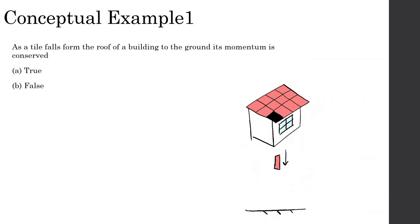As a tile falls from the roof of a building to the ground, its momentum is conserved — true or false? This is false. As the tile is falling, the momentum is increasing — it's getting faster and faster while the mass stays the same, so momentum increases. The force of gravity is acting on the tile for a certain amount of time, delivering an impulse that changes the momentum, making it go faster and faster.